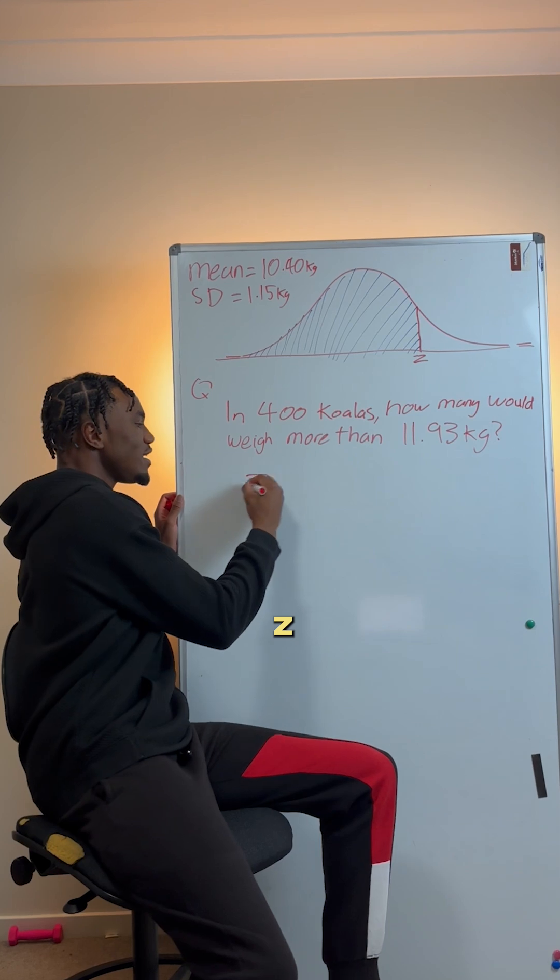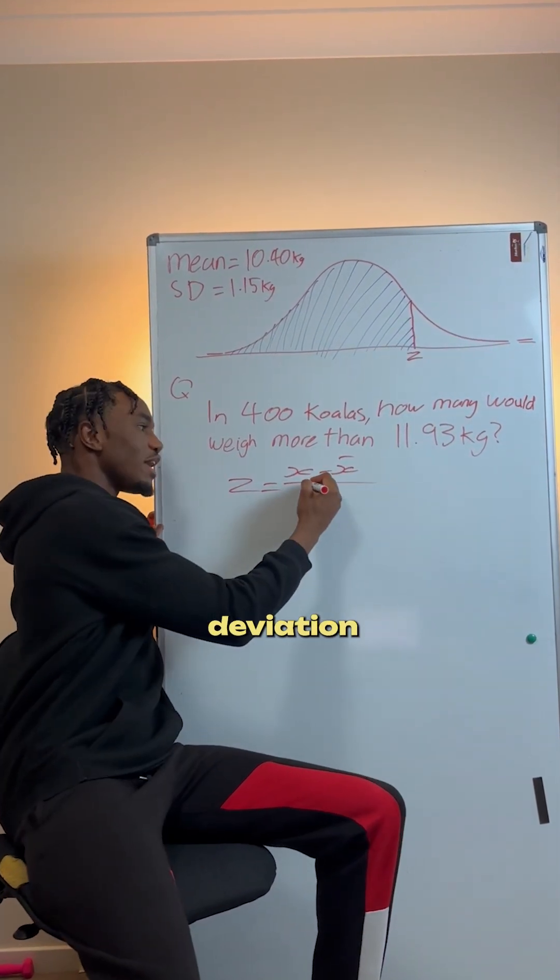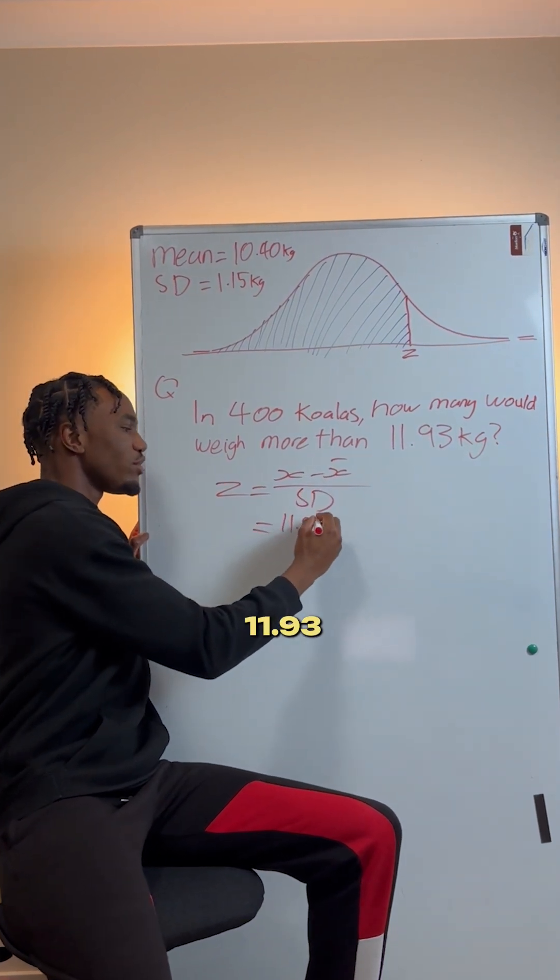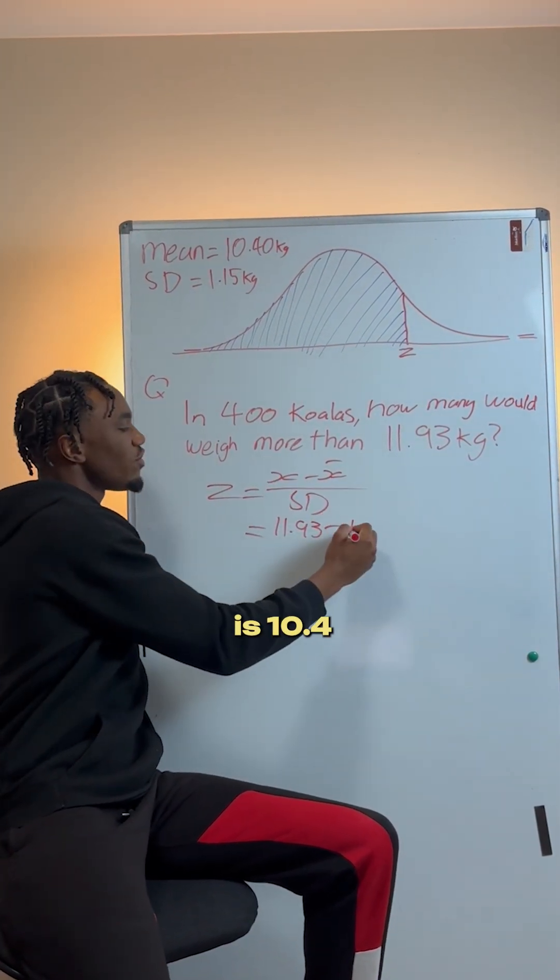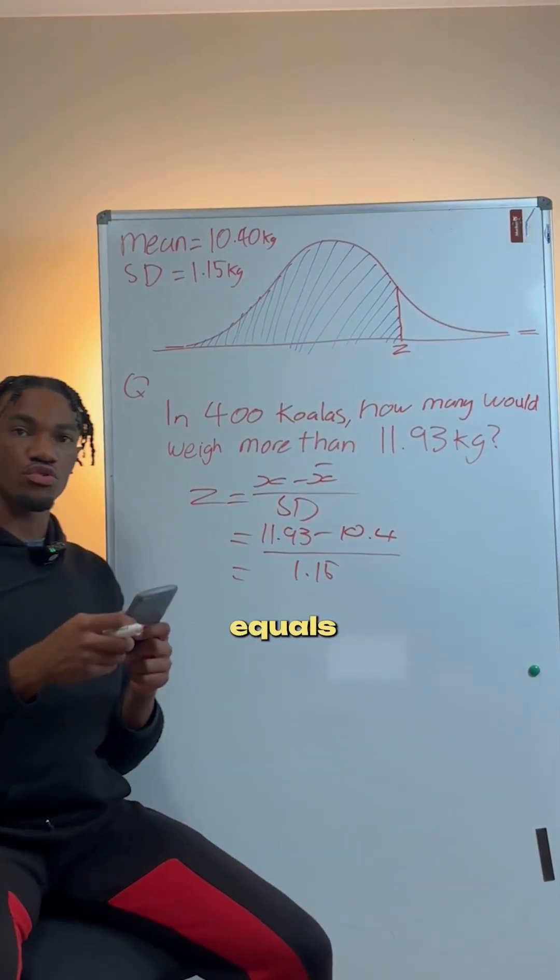So here's how I would approach it. z equals score minus mean over standard deviation. Sub this in, so our score is 11.93 minus the mean, which is 10.4, over 1.15. And that equals 1.33.